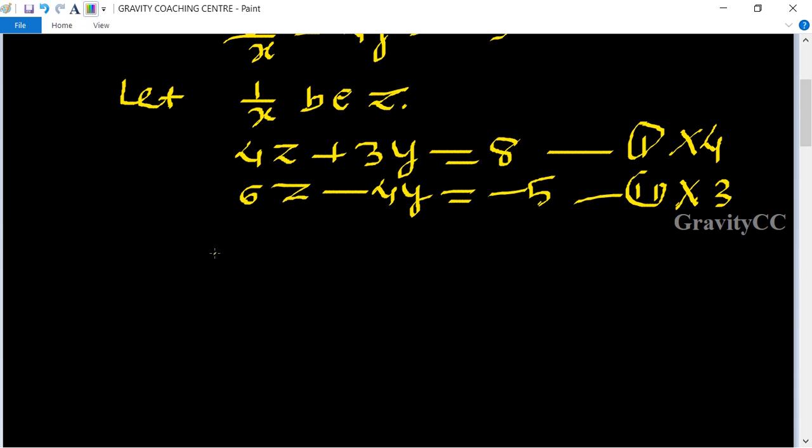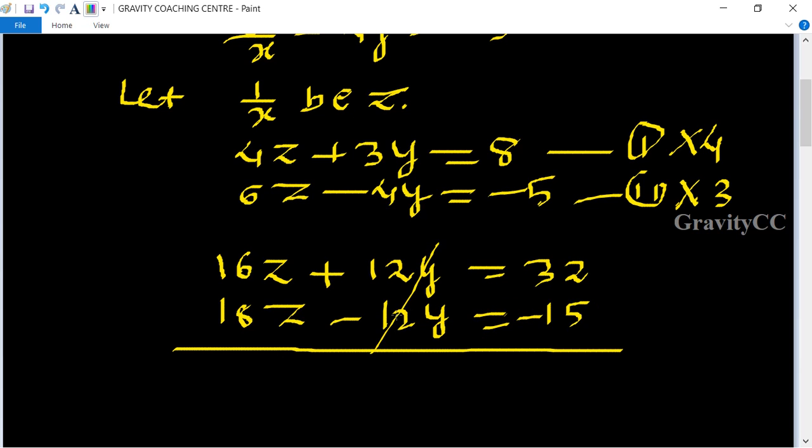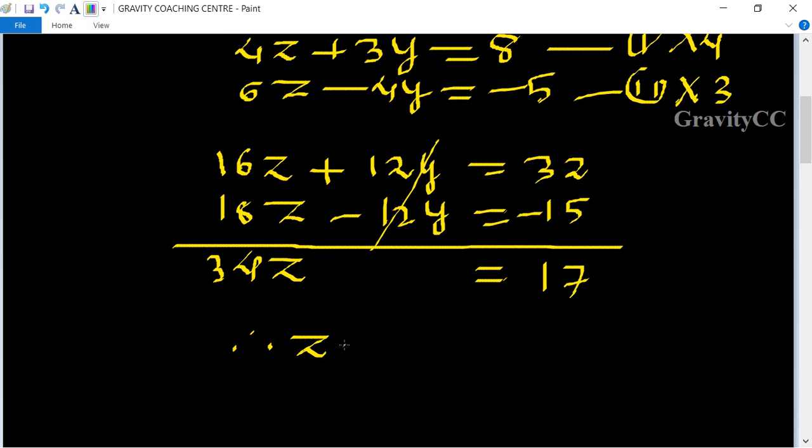We get 16z + 12y = 32 and 18z - 12y = -15. Here 12y and -12y cancel, so 34z = 17. Therefore z = 17/34, which simplifies to z = 1/2.